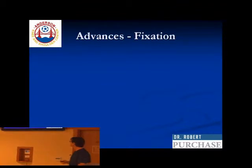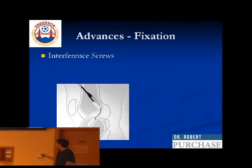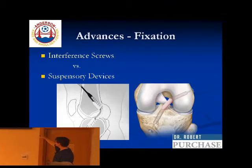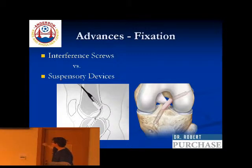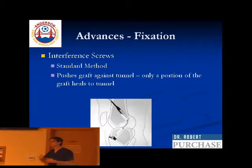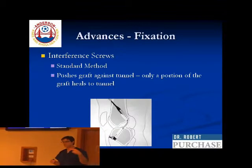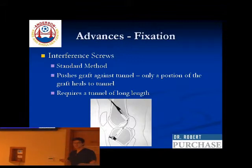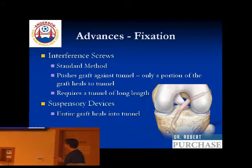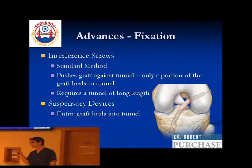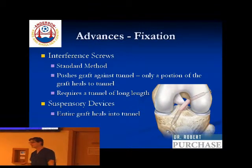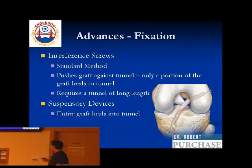In terms of fixation, the old way was interference screws — putting the screw in to sandwich the graft against the tunnel. It worked great, but suspensory devices with little metal buttons may be a little bit better. When you make the tunnels more diagonal, you have a shorter tunnel, so you run out of real estate for interference screws and have to rethink fixation. The suspensory device is a nice solution. There were suspensory devices 20 years ago — people liked that you had the entire graft healing into the tunnel — and now we're forced back to them, and maybe they really are better.